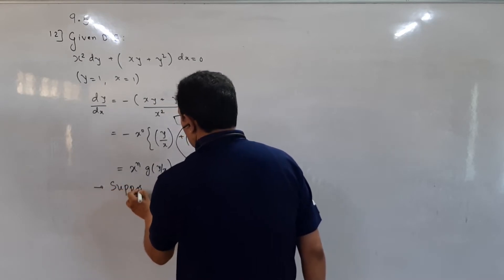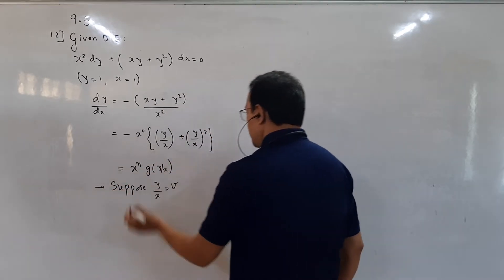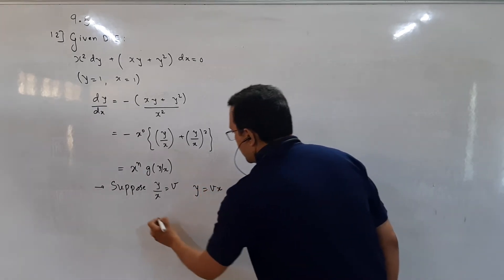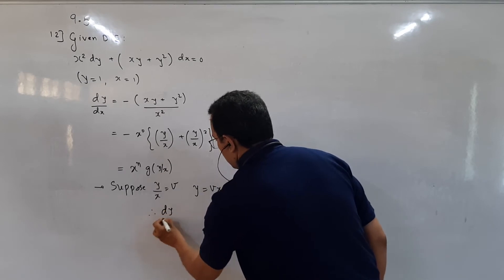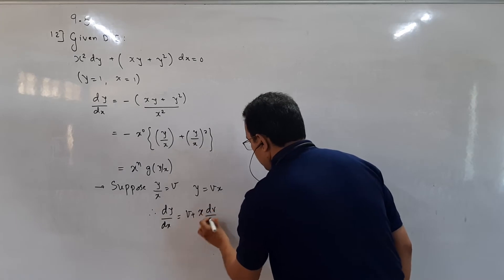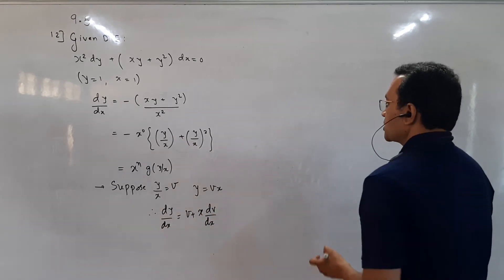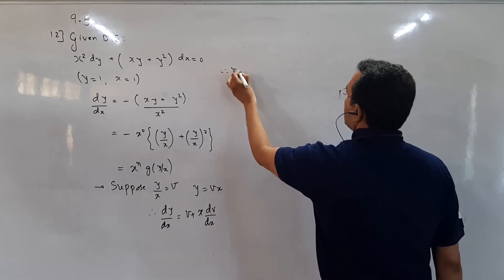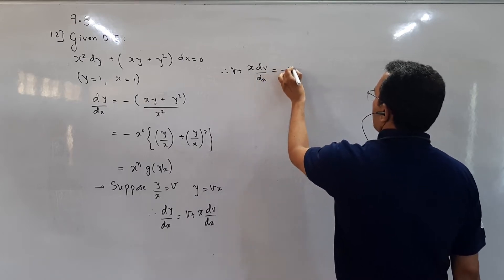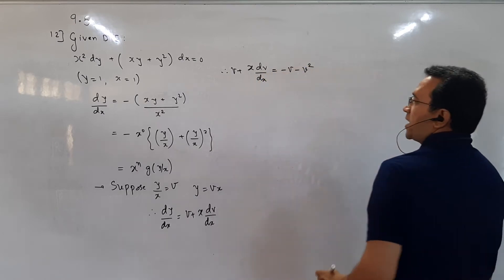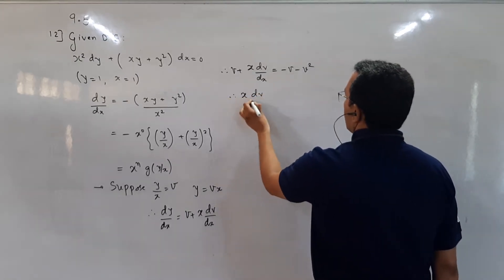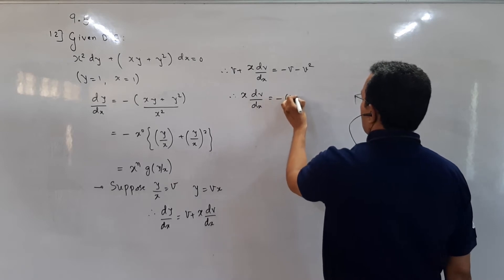To solve a homogeneous differential equation, we take the substitution y/x equal to v, so y equals vx. Therefore dy/dx equals v plus x dv/dx. Substituting this value, we get v plus x dv/dx is equal to minus v minus v squared.